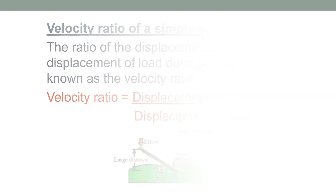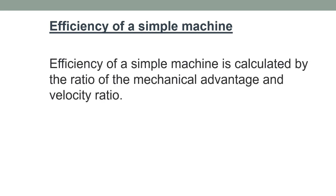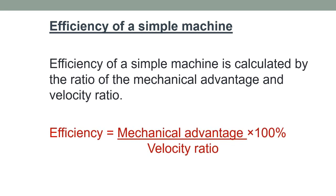The next equation is on efficiency of a simple machine. To find the efficiency, you have to divide the mechanical advantage by the velocity ratio and multiply by 100.